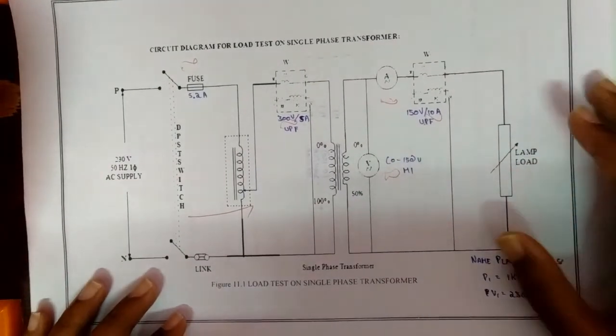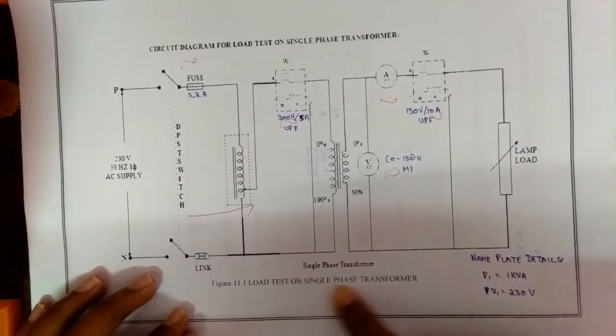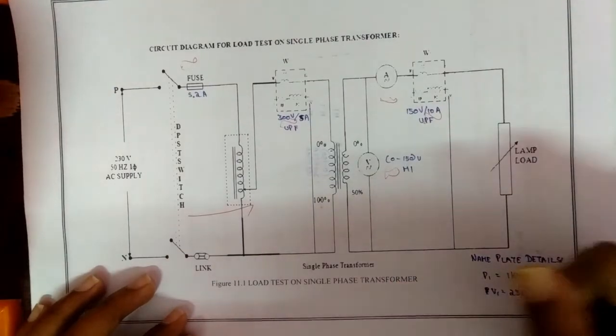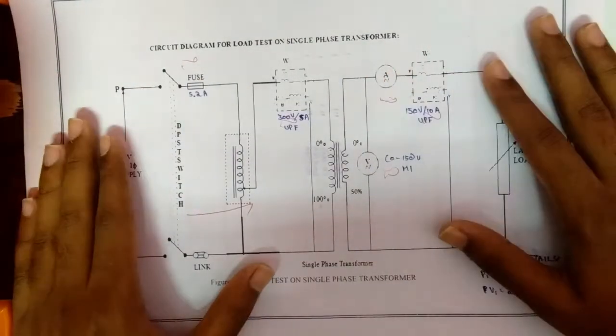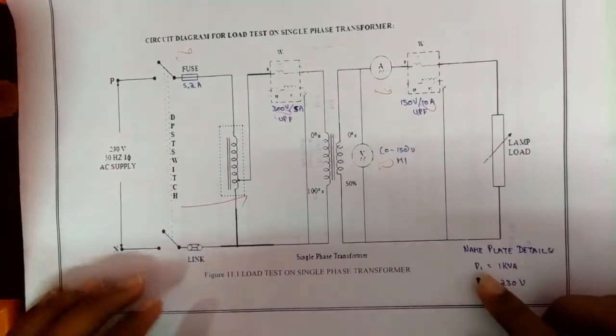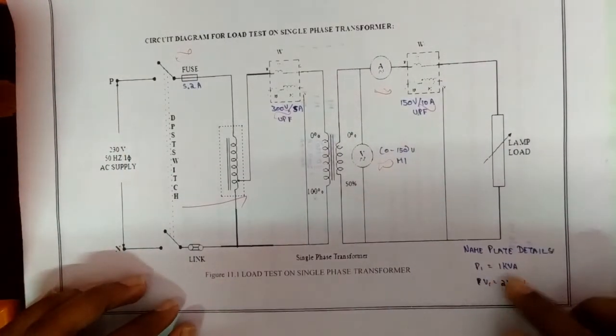Hi guys, in this experiment we're going to see about load test on single-phase transformer. So the circuit diagram is this one, and the nameplate details will be P1 is equal to 1 kVA and V1 is equal to 230 volts.